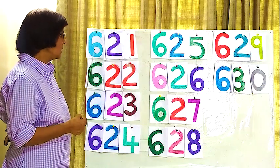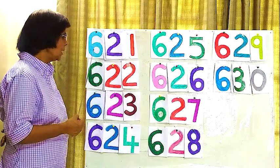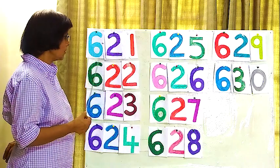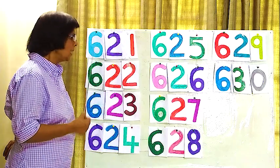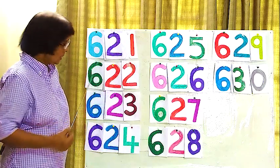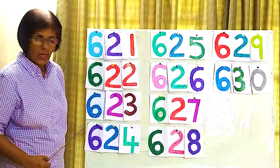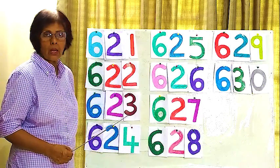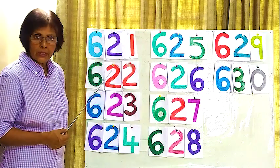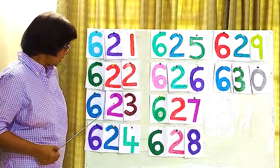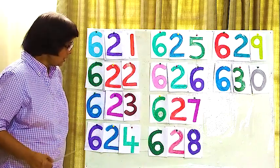This is 621. See how we are writing 621. 621, 621. This one 623, 623. 621, 622, 623, 624.